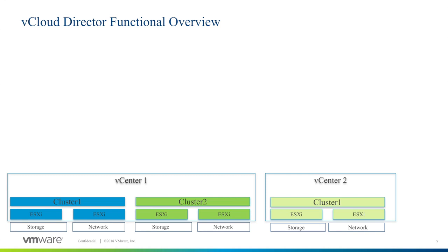Cloud resources are an abstraction of their underlying vSphere resources. They provide the compute and memory resources for vCloud Director virtual machines and vApps. Cloud resources also provide access to storage and network connectivity. Cloud resources include provider and organization virtual data centers, external networks, organization virtual data center networks, and network pools. Before you can add cloud resources to vCloud Director, you must add vSphere resources.